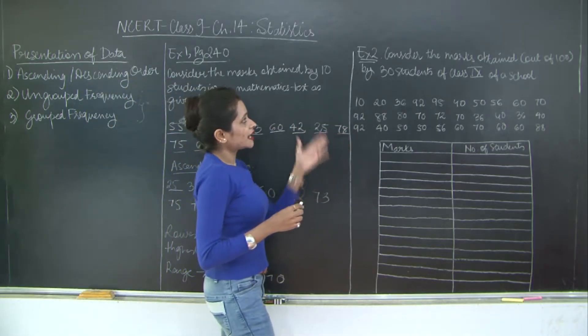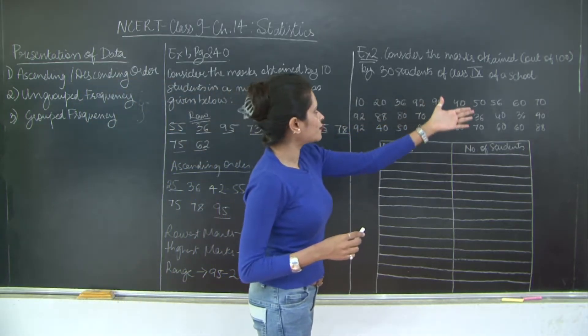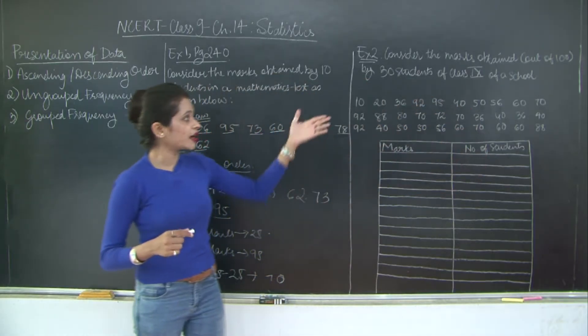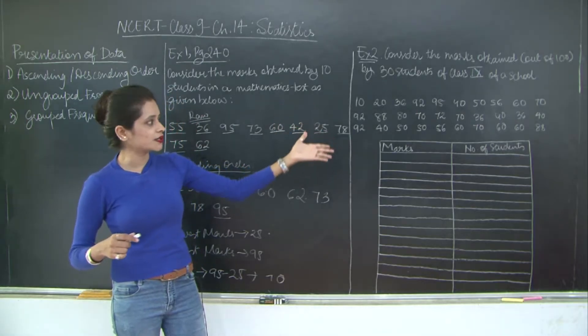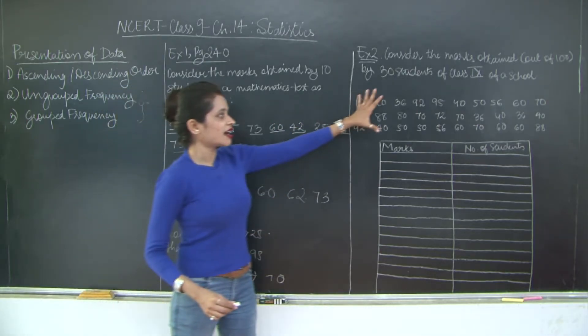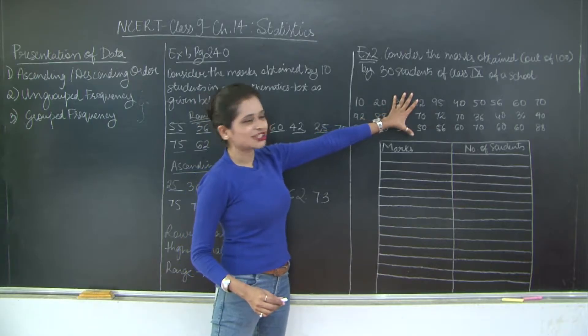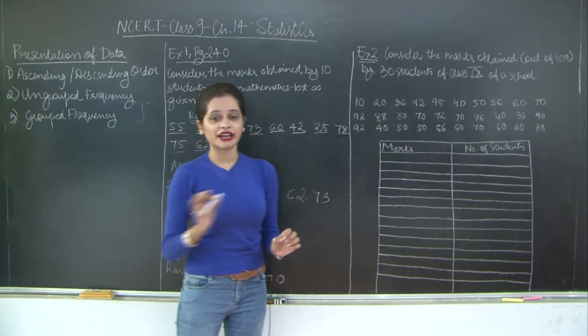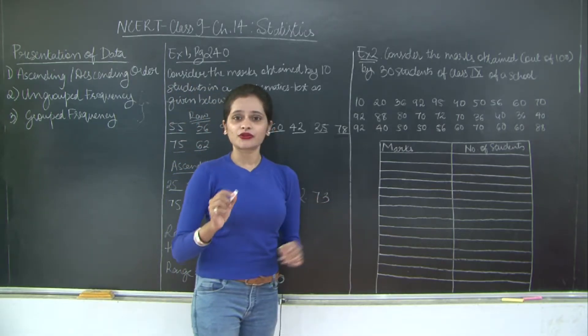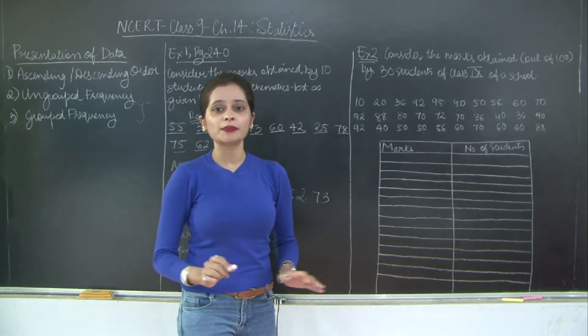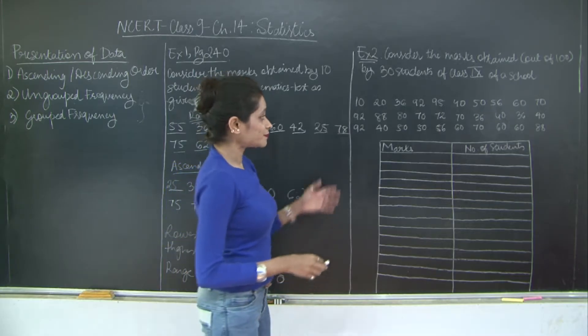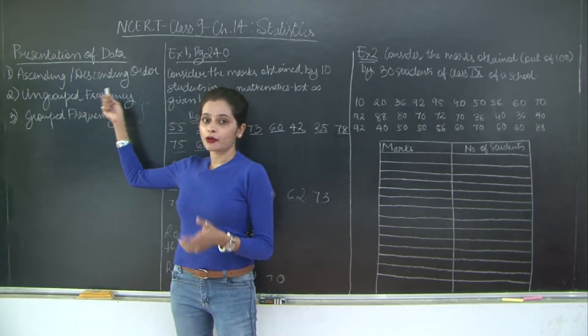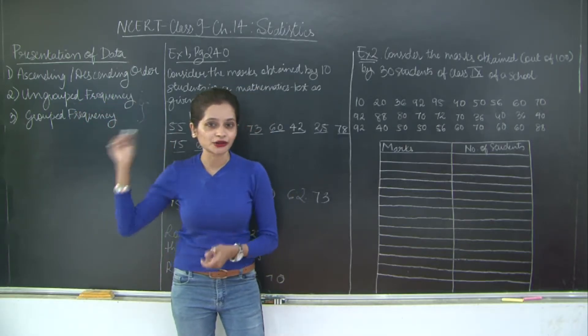So for that we have example 2 on page 240 of your textbook itself. Let's read it out. Consider the marks obtained out of 100 by 30 students of class 9 of a school. And here are the marks for 30 students. Now just imagine organizing just these 30 observations in ascending descending order. It was going to take a lot of time, efforts, patience and first of all towards the end also you would not be sure whether you've done it right or not.